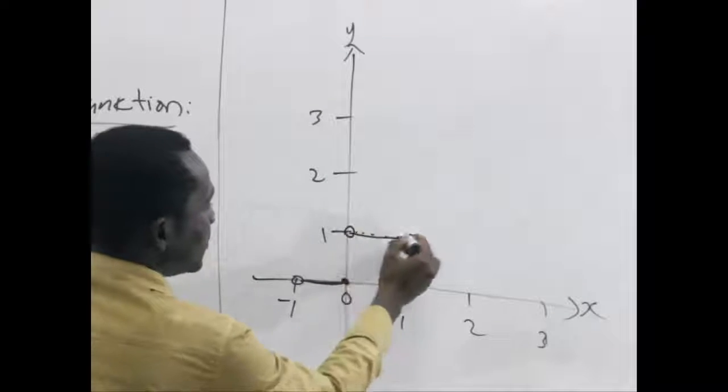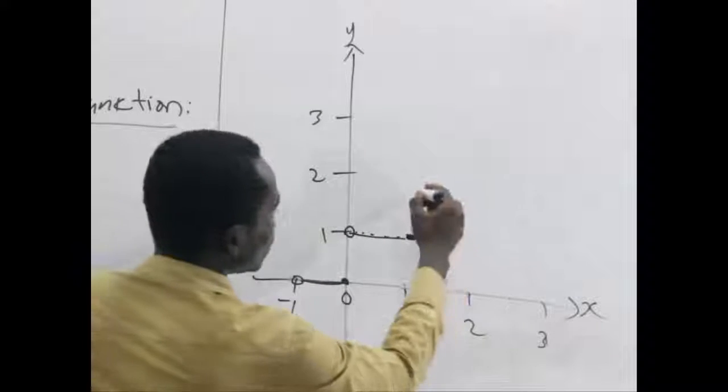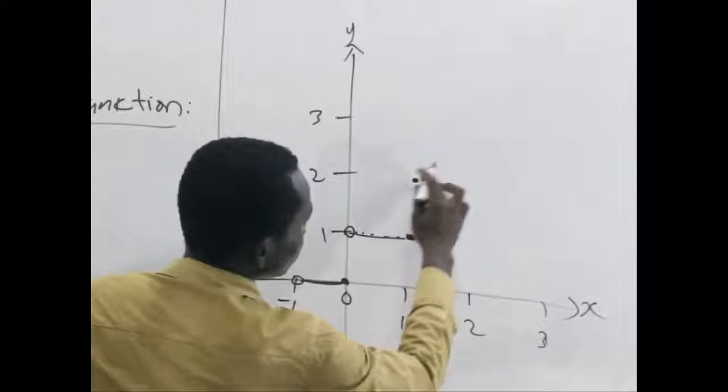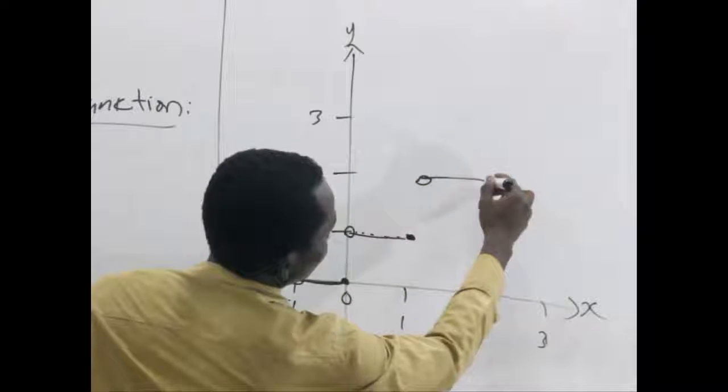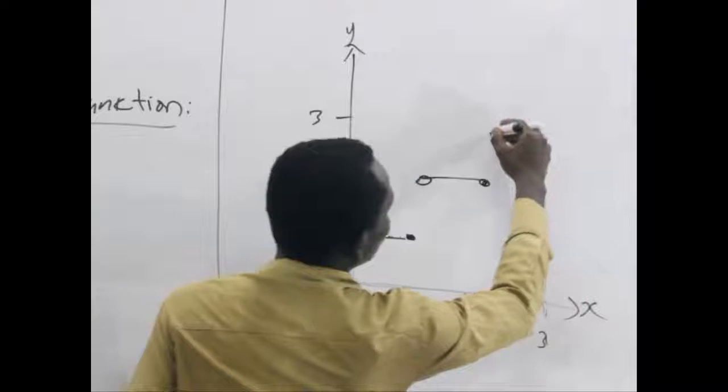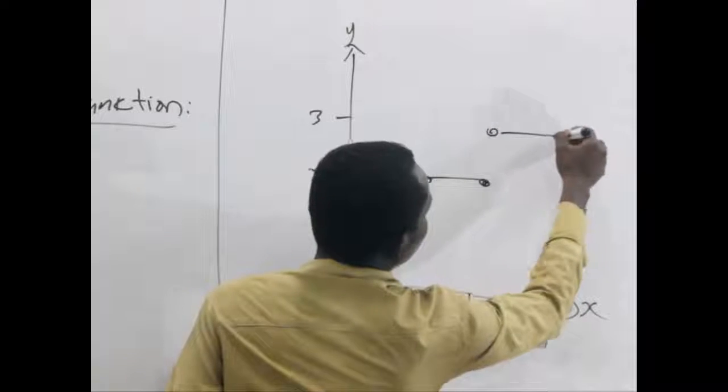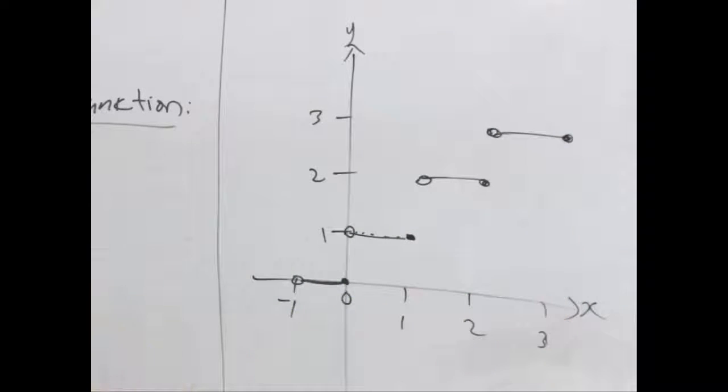So, we have the open space here. From 2 also, we have 2. From 3 also, we have the open space. And that's it.